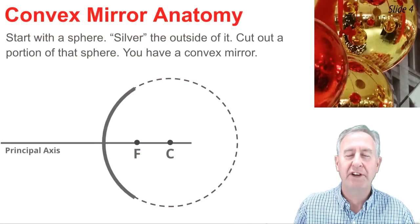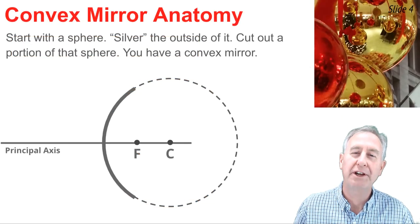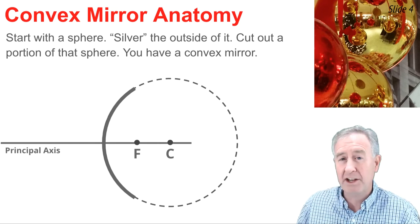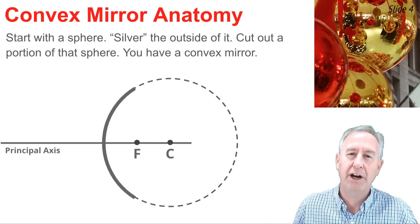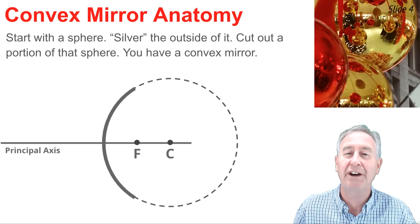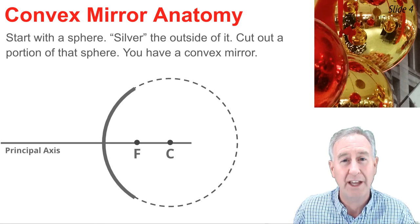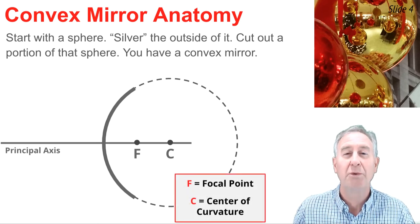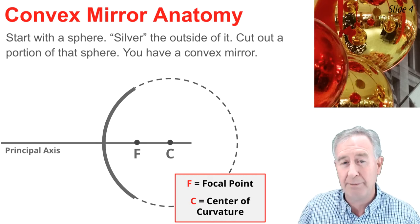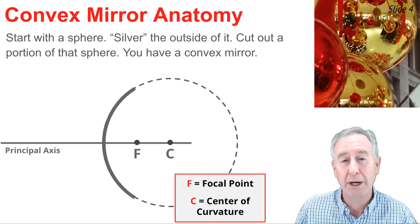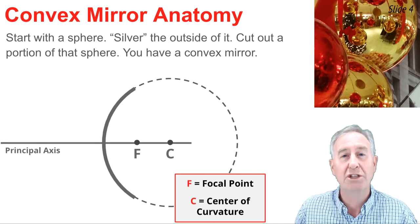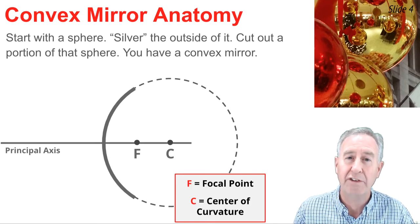If you start with a sphere and put a reflective coating on the outside of it and then cut out a portion of that sphere, you have a convex mirror. A convex mirror has a principal axis — an imaginary line that passes through the center of that sphere from which the mirror was cut. Along the principal axis are two points. One is the center of curvature, marked C on the diagram — it's the center of that sphere from which the mirror was cut. Then there's the focal point, marked F, which is the midpoint between the mirror's surface and the center of curvature.